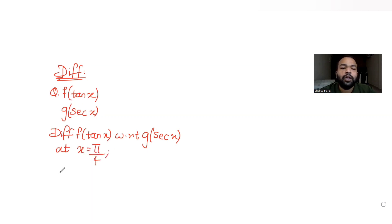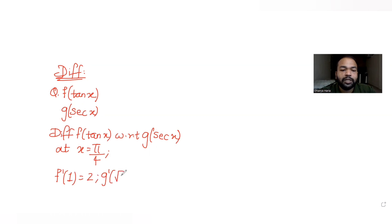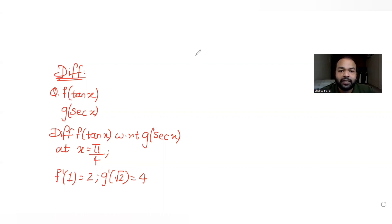They have also told us that f'(1) is equal to 2, and g'(√2) is equal to 4. We need to find the value of the differentiation of f of tan x with respect to g of sec x, and there are four options given to us.